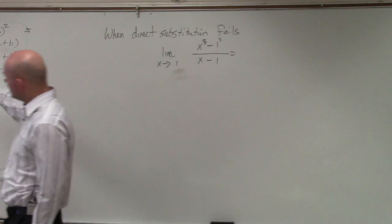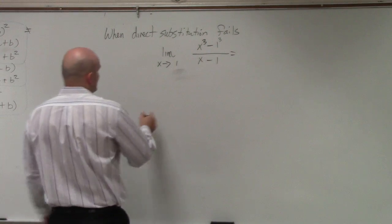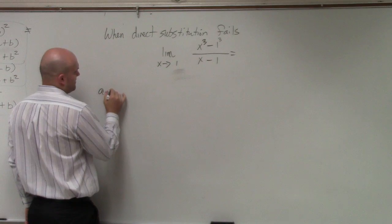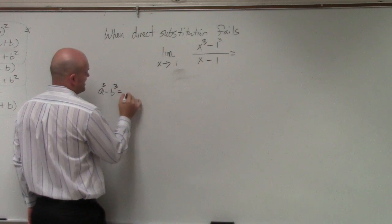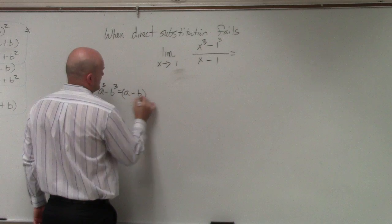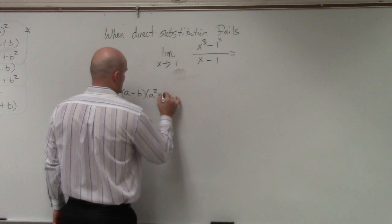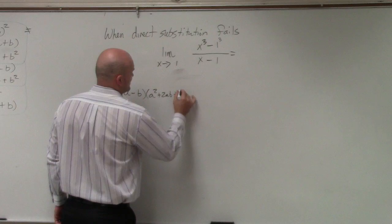which is if you have a cubed minus b cubed equals (a minus b) times (a squared plus 2ab plus b squared).